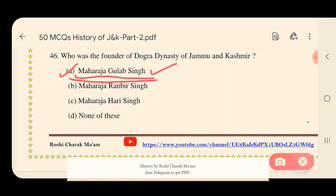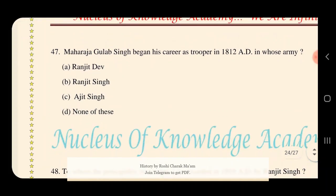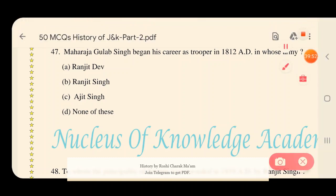Question 48: Maharaja Gulab Singh began his career as a trooper in 1812 AD in whose army? Options: A) Ranjit Dev, B) Ranjit Singh, C) Ajit Singh, D) None of these. The answer is option B — Ranjit Singh. Gulab Singh started his career as a trooper in Ranjit Singh's army.